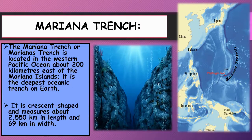The Mariana Trench is located in the western Pacific Ocean, about 2,000 km east of the Mariana Islands. It is the deepest trench in the world — crescent-shaped, measuring about 2,550 km in length and 69 km in width, with a depth of around 11,034 meters.